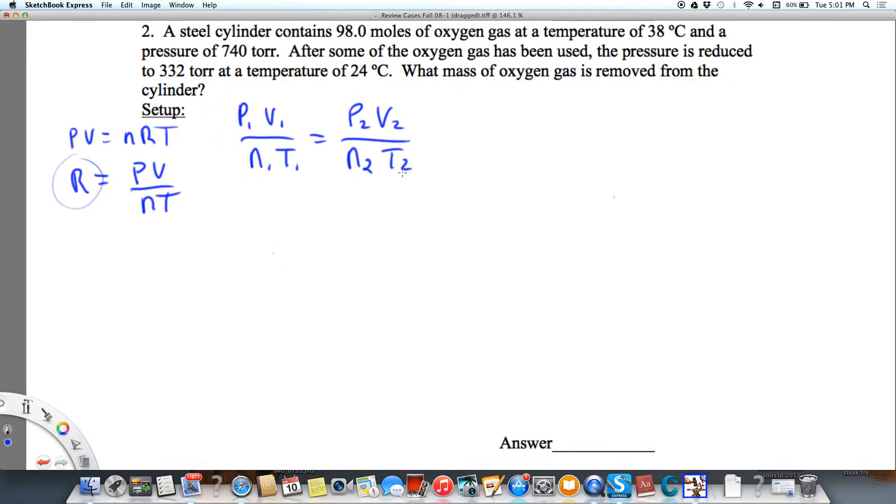what mass of oxygen was removed? Well, what would be removed would be my initial moles minus my final moles. So I've been given 98.0 moles at the beginning. What I really want to do is solve for nF, my final moles. Then I can figure out the moles removed and convert to grams.